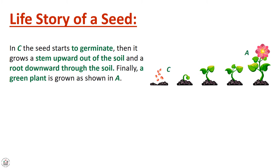يعني أولاً حبة الفاصولياء موجودة في التربة. بعدين تتطور إلى قسمين: ساق وجذر. الساق يطلع لفوق خارج التربة والجذر ينزل لتحت داخل التربة، كما تشاهدون في الصورة.